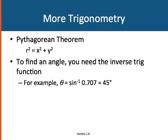If we want to find an angle, we can first figure out r from the Pythagorean theorem, and then we use an inverse trigonometric function. For example, if sine theta is equal to some number, then theta is equal to the arcsine of that number. For example, theta is equal to the arcsine or the inverse sine of 0.707. That would be a 45 degree angle.